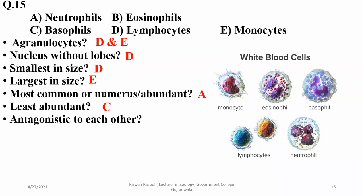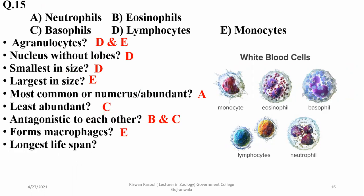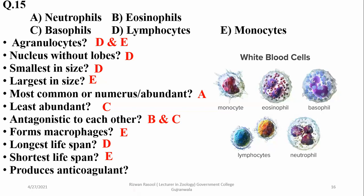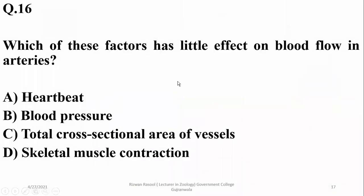Basophils and eosinophils are antagonistic to each other: basophils produce histamine, which causes inflammation, while eosinophils inactivate inflammation-producing substances. Monocytes form macrophages. The longest lifespan is observed in memory cells produced by B or T lymphocytes, and the shortest lifespan is in monocytes, which stay in the bloodstream for a few hours before moving to body tissues to form macrophages. Anticoagulant production is a function of basophils.